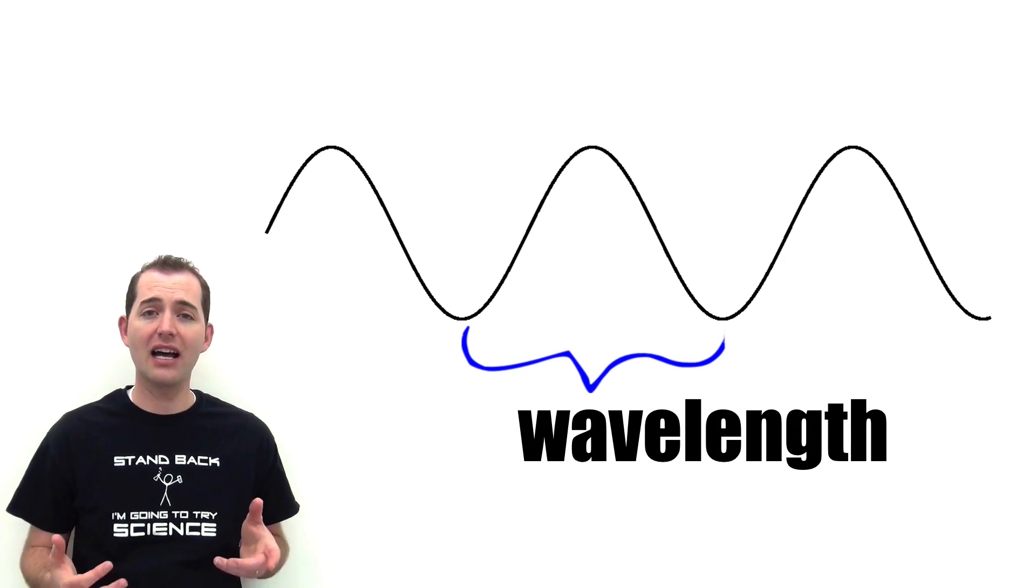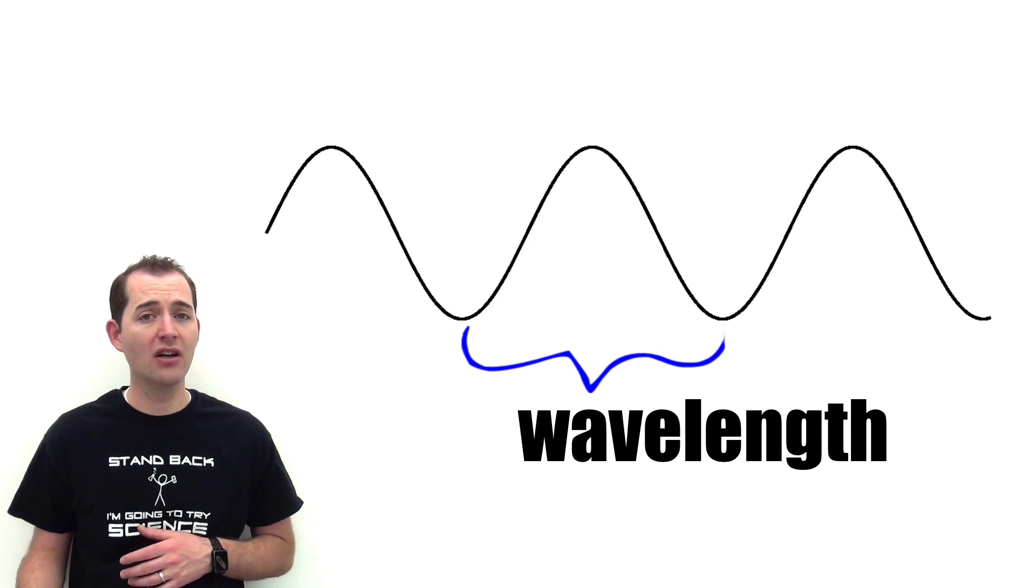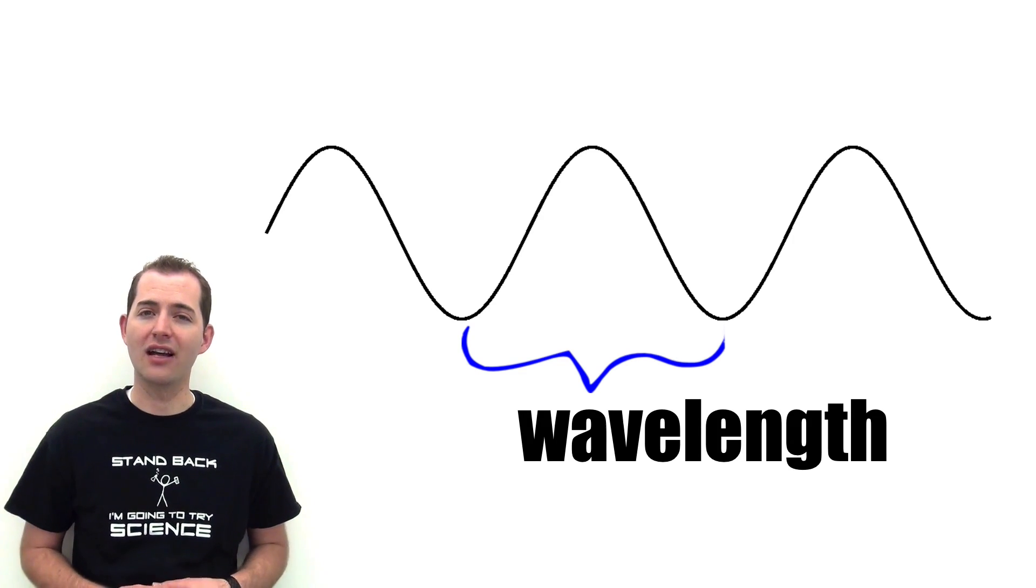Wavelength is the length or size of a wave and is typically measured from trough to trough or from crest to crest on that wave.